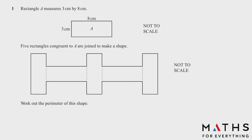Question 1: Rectangle A measures 3 by 8 centimeters. Five rectangles congruent to A are joined to make a shape. Work out the perimeter of this shape. This is an interesting question. Let's first find the length: this is 8, 8, 8, 8, 8, 8 — how many 8s do we have? 1, 2, 3, 4, 5, 6 — so 8 times 6 which is 48.